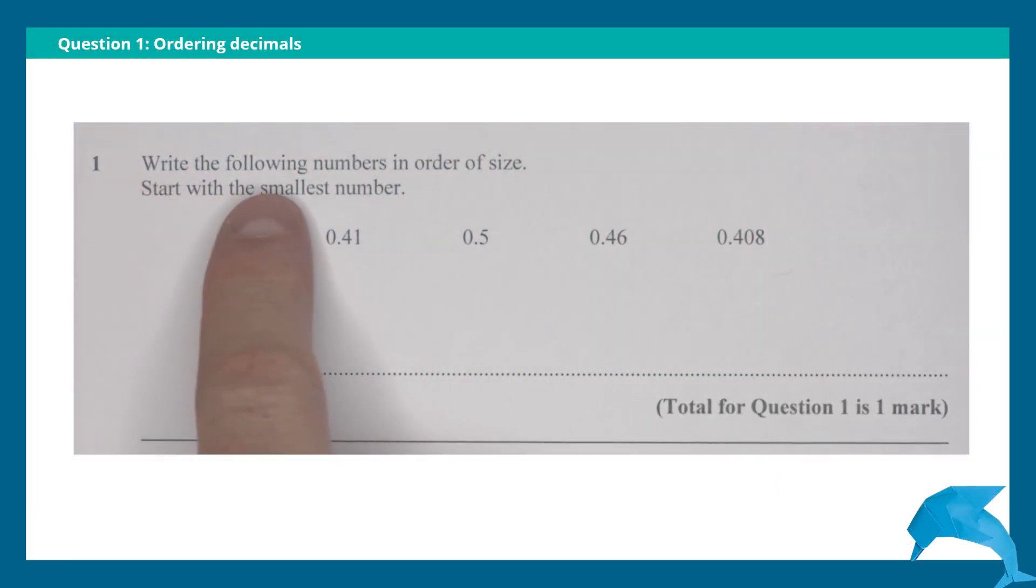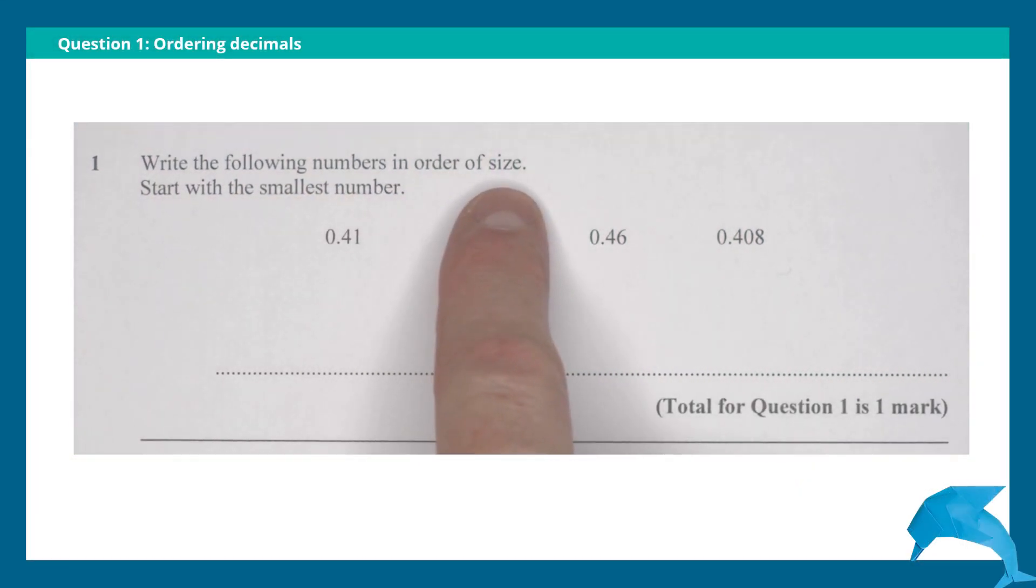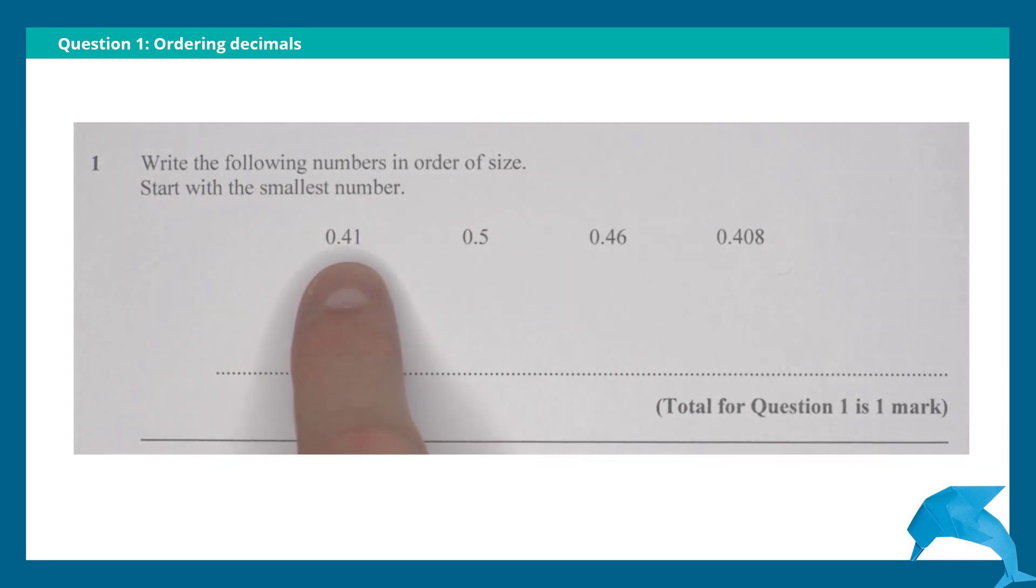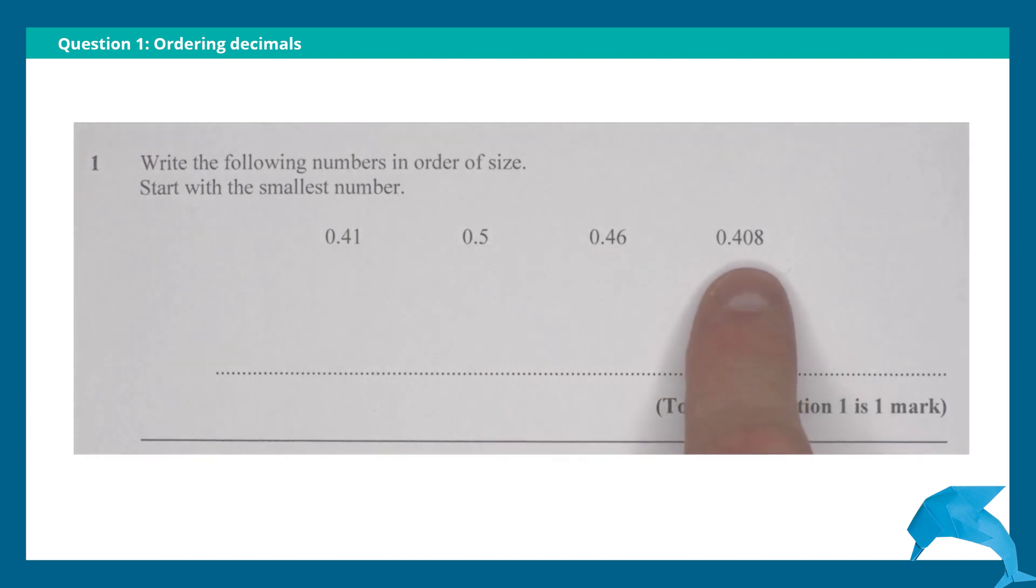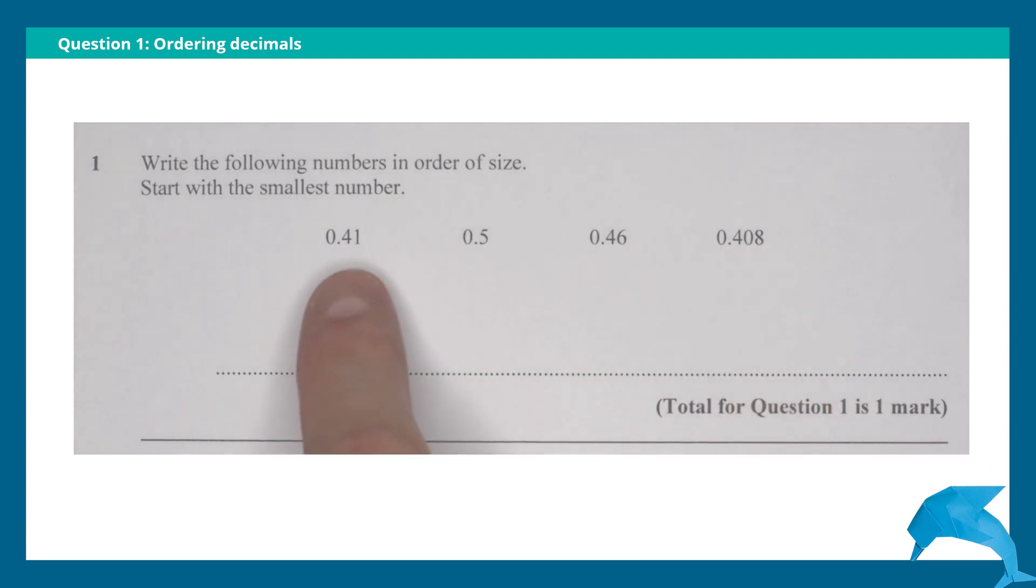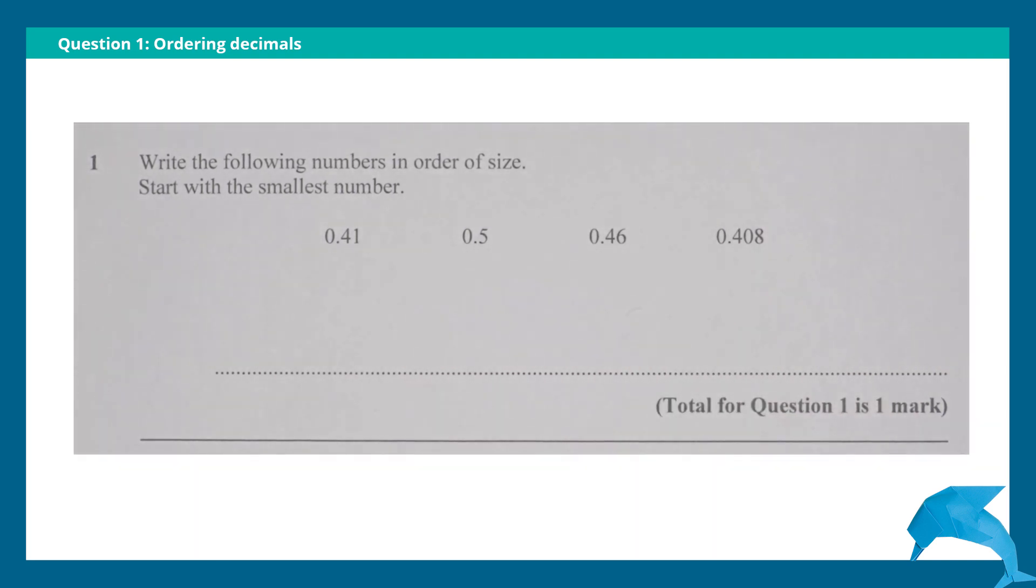Question 1: Write the following numbers in order of size, start with the smallest number. 0.41, 0.5, 0.46, 0.408. Now, what I've spotted is all of these start with zero point, so looking after that decimal point, this value here has three digits after that decimal point. The rest do not, so I'm going to add zeros to make it fair so they all have three digits after that decimal point.